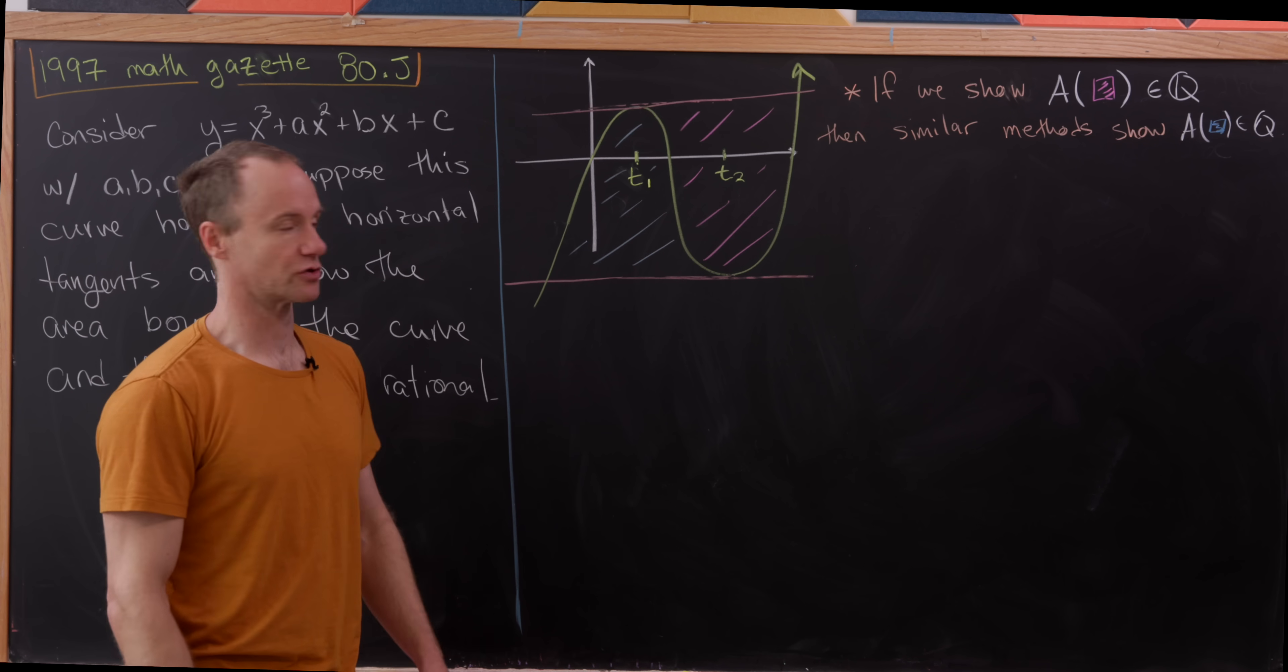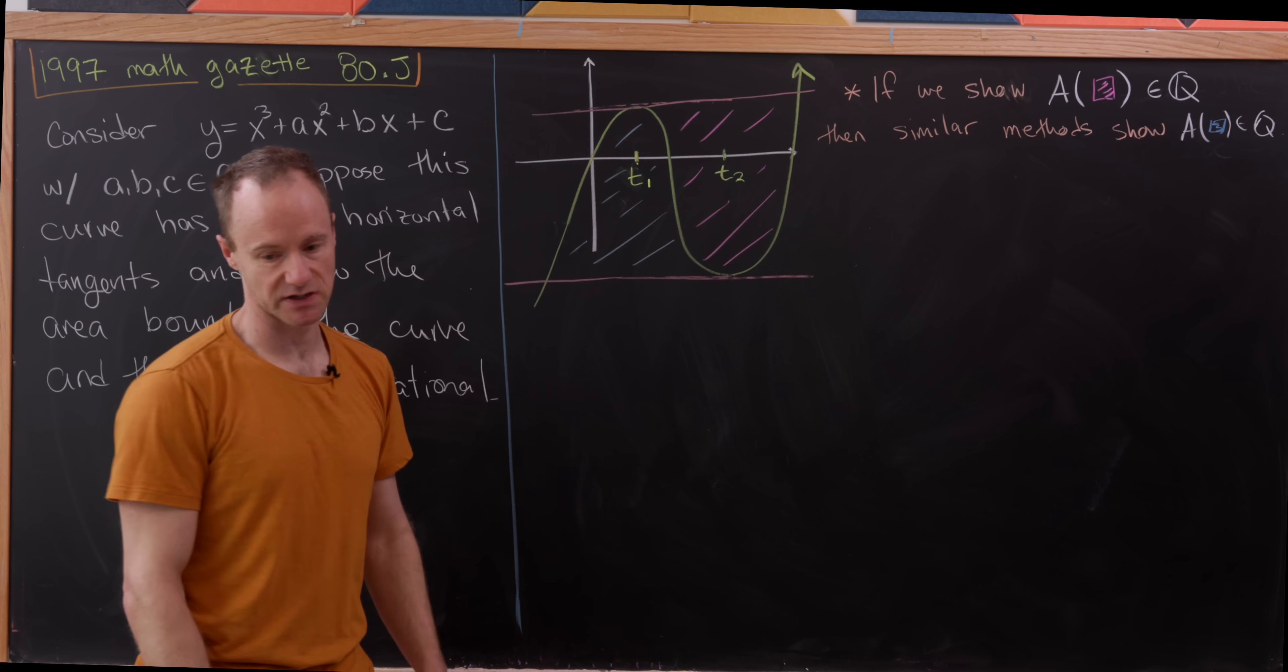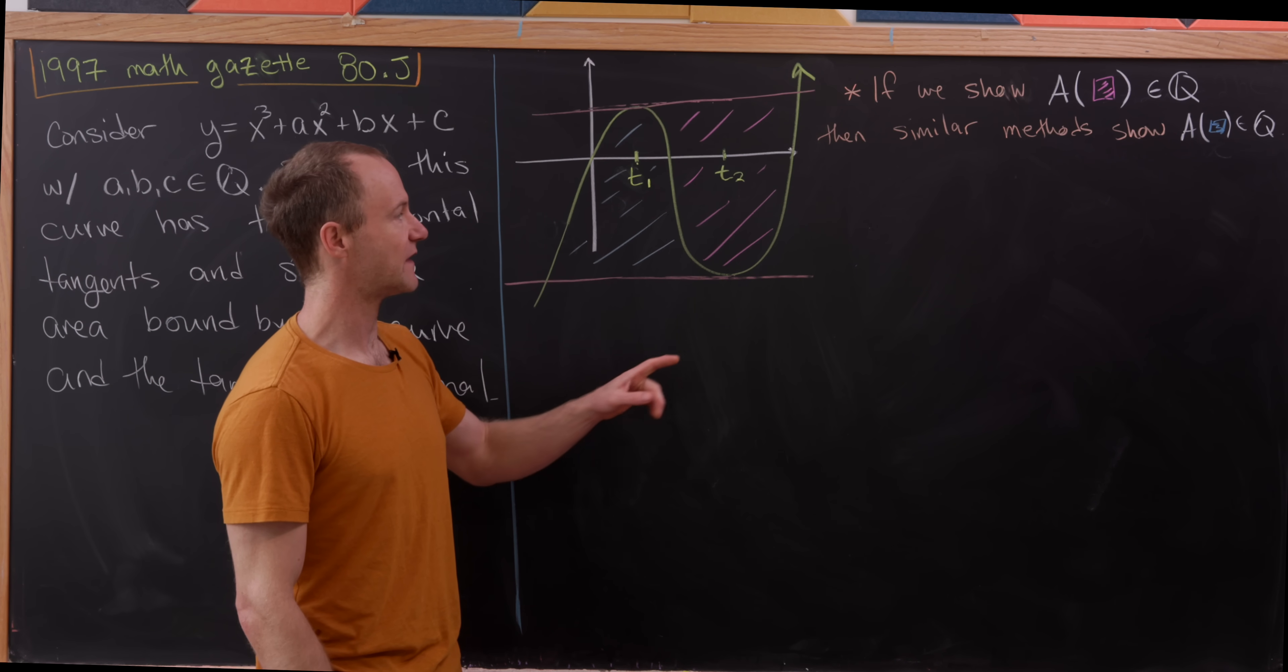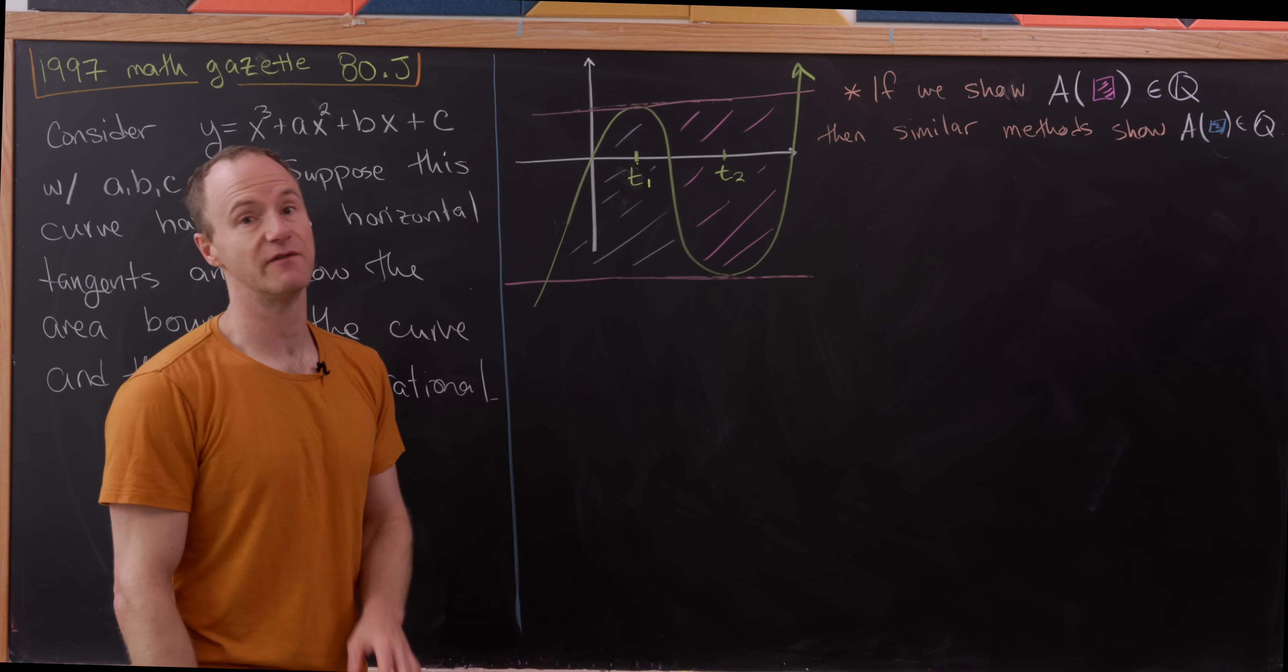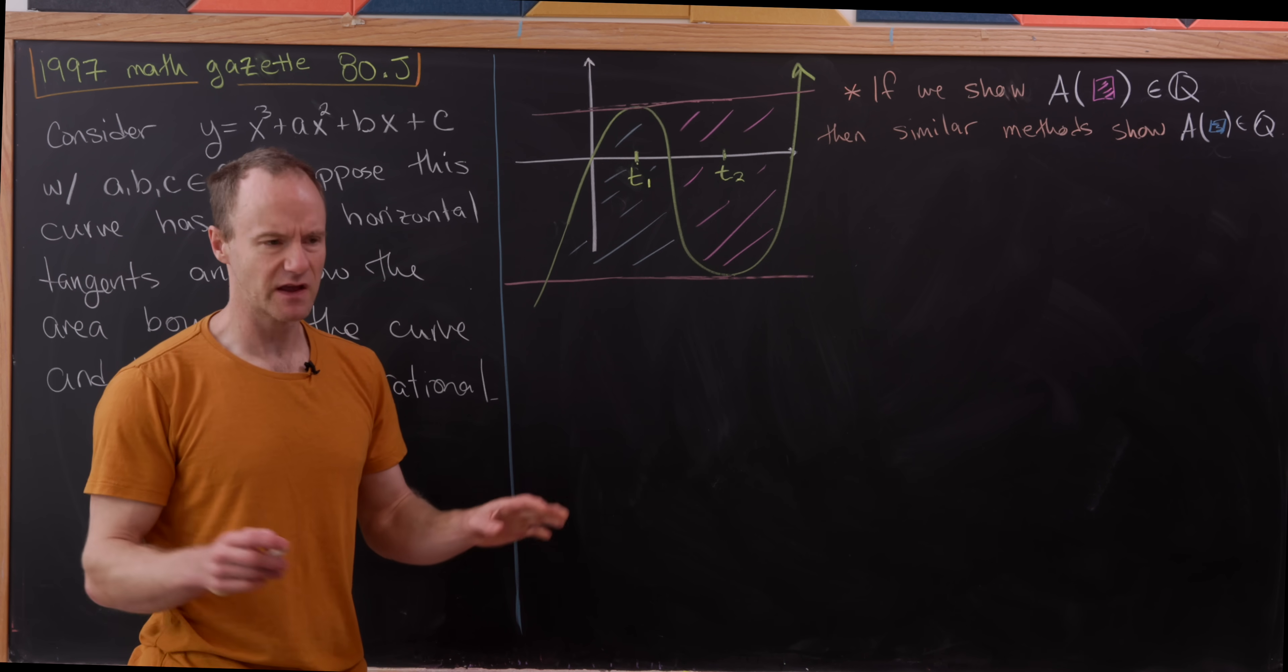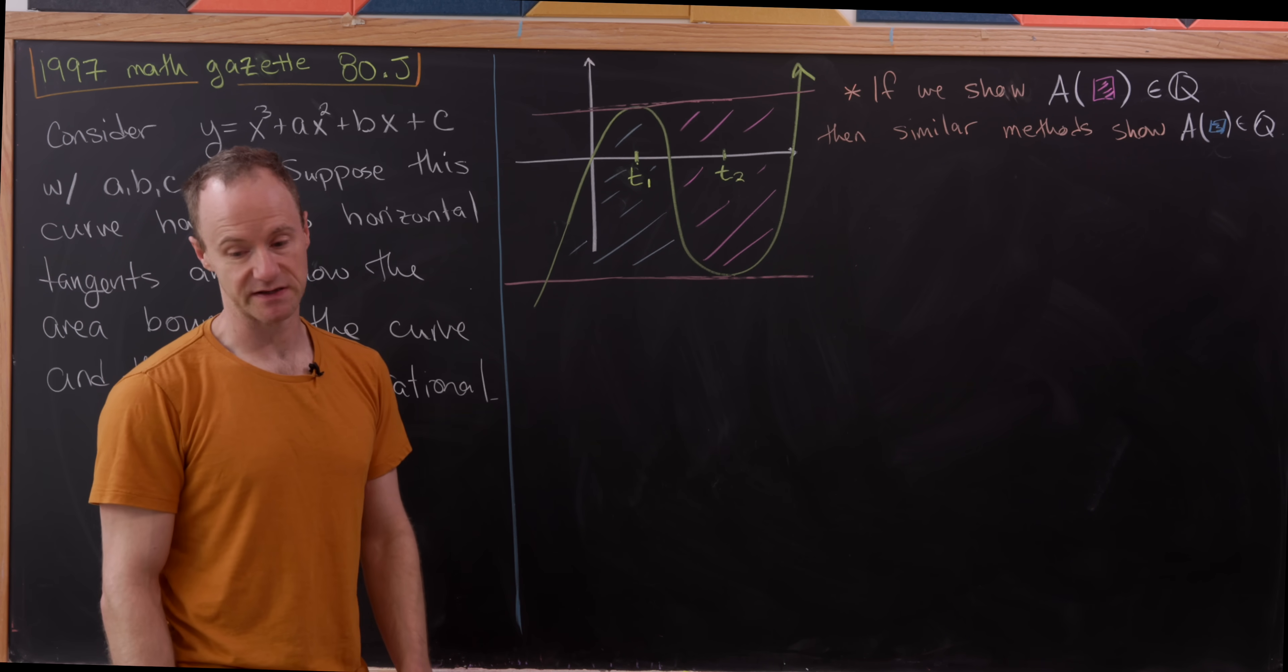So I've got my picture over here. So this is a mock-up of a cubic polynomial or the graph of a cubic polynomial that has two horizontal tangent lines. So I've put those at this point t1 and t2. And I'd like to observe that if we can show that the area of one of these is rational, then extremely similar methods will show that the area of the other one is rational as well. So we'll in fact only focus on the area of this magenta piece right here.